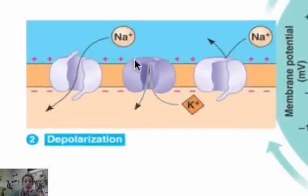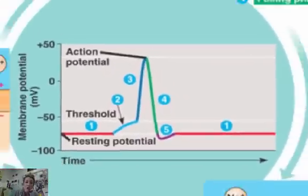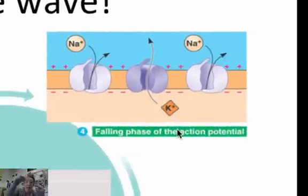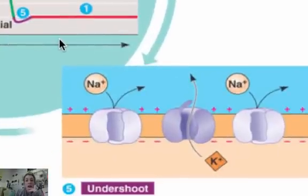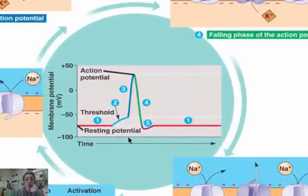During depolarization, the sodium channels open and sodium floods into the neuron — that's where the potential shoots up. Then more sodium comes in, followed by repolarization — the falling phase — where potassium goes out. Then you have hyperactive potassium going out and sodium can no longer get in, creating the refractory period — a small window where nothing can reset back to resting potential.